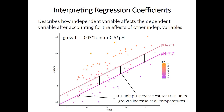One important caution: the value of a coefficient will change — even potentially reversing sign — when you include different independent variables in the model. For example, adding salinity as a variable might change the pH coefficient from 0.5 to something bigger or smaller. It can even change whether a variable is statistically significant. The effect of an independent variable is context-dependent — it's only true after you've accounted for all the other independent variables.